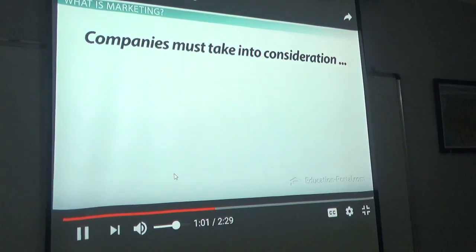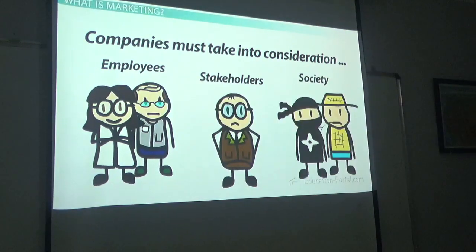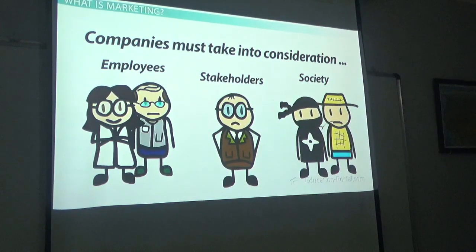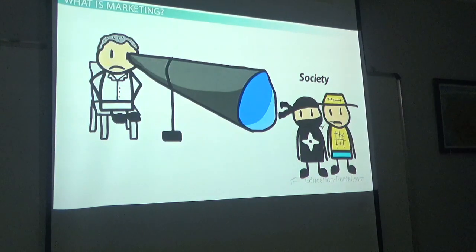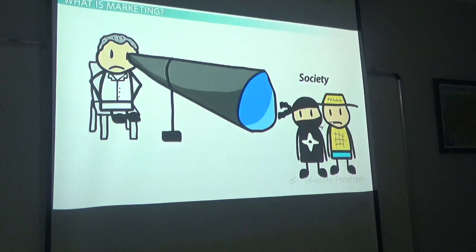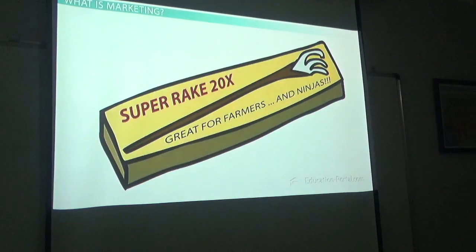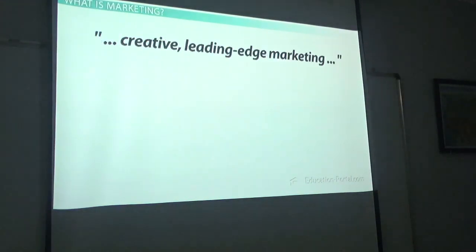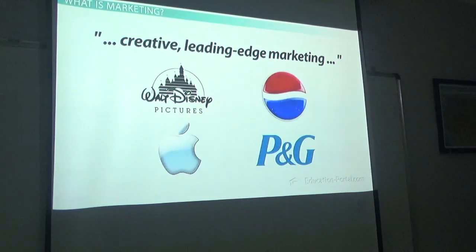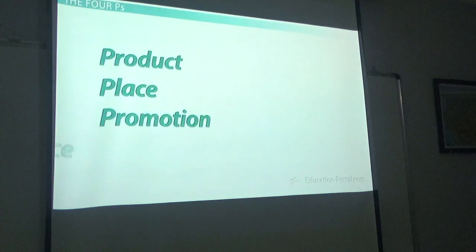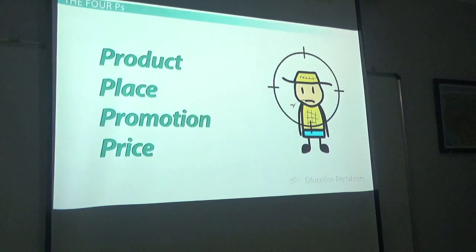Companies must take into consideration their employees, stakeholders, and society. The most successful companies engage in very consumer-oriented marketing — they spend enormous amounts of time, money, and resources examining the everyday lives of their customers, then create products to fill a need. Examples of companies known for creative, leading-edge marketing are Disney, Pepsi, Apple, and Procter & Gamble. Marketing is made up of four elements — product, place, promotion, and price — and these elements must be used in a cohesive plan to effectively target the consumer.